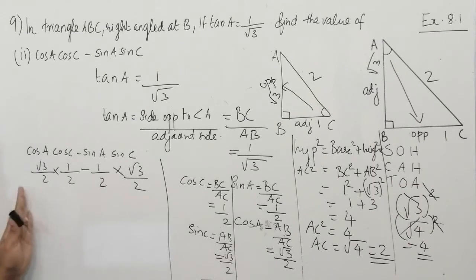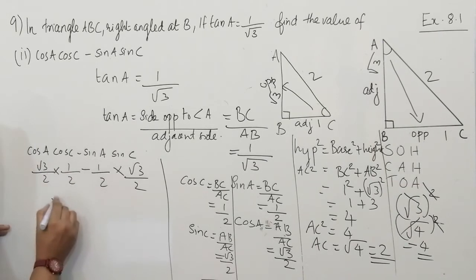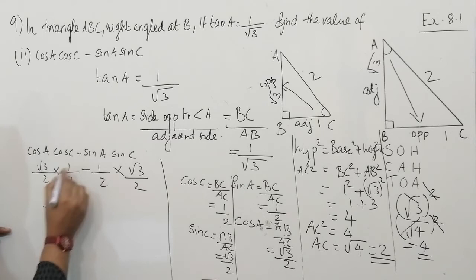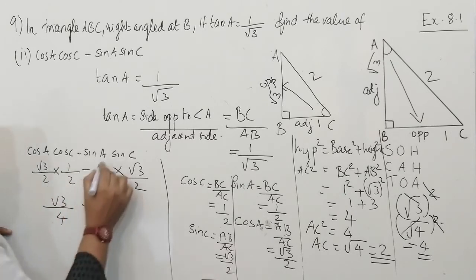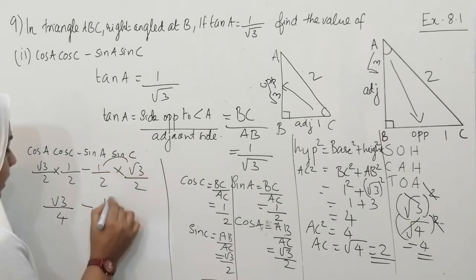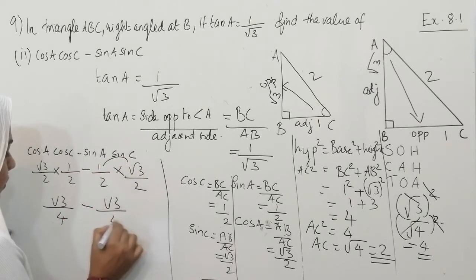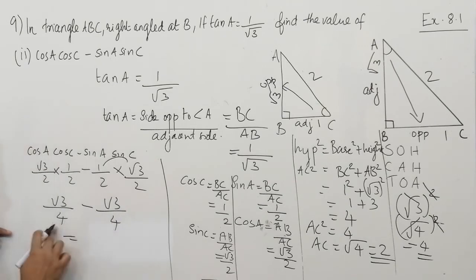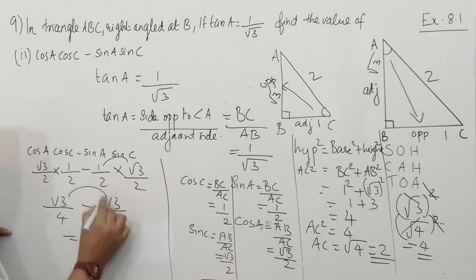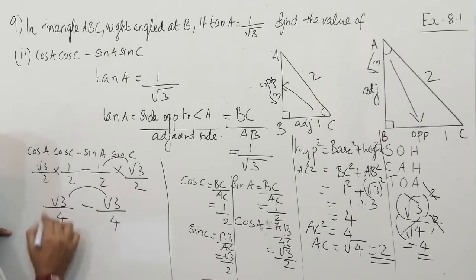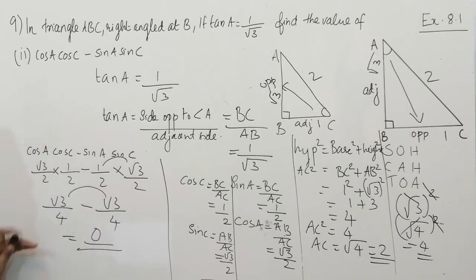Multiplying numerators and denominators: root 3 times 1 is root 3, and 2 times 2 is 4, giving root 3 by 4. Then 1 times root 3 is root 3, and 2 times 2 is 4, giving root 3 by 4. The denominators are the same, so we subtract directly: root 3 minus root 3 is 0. The answer is 0. We have finished question number 9.